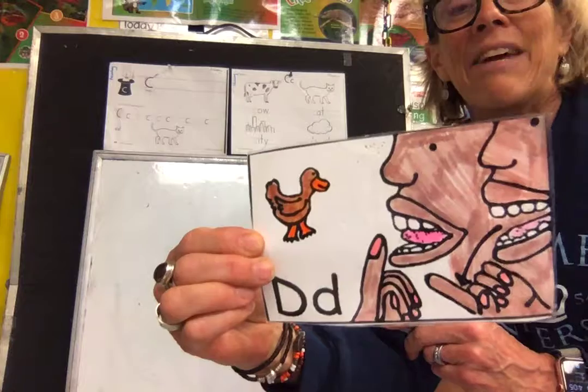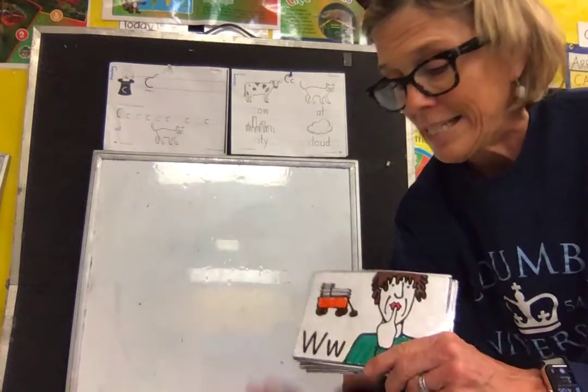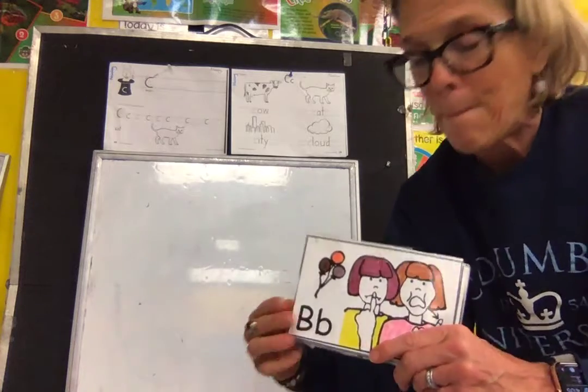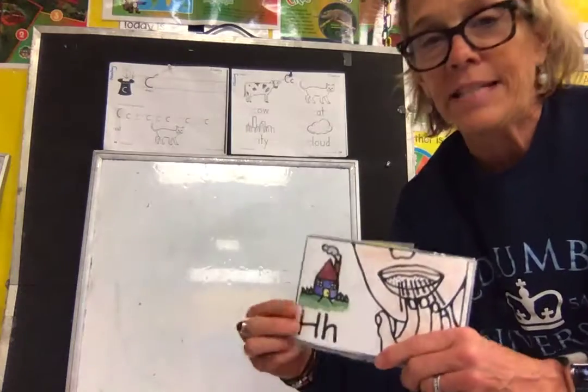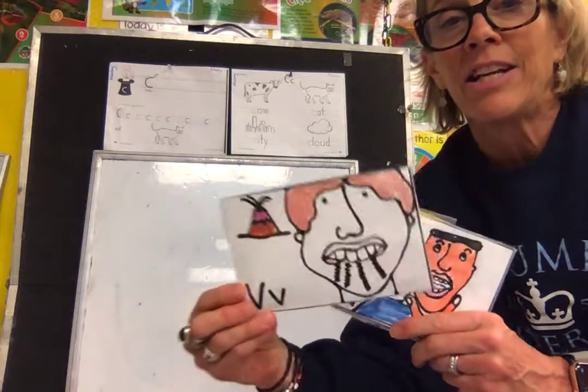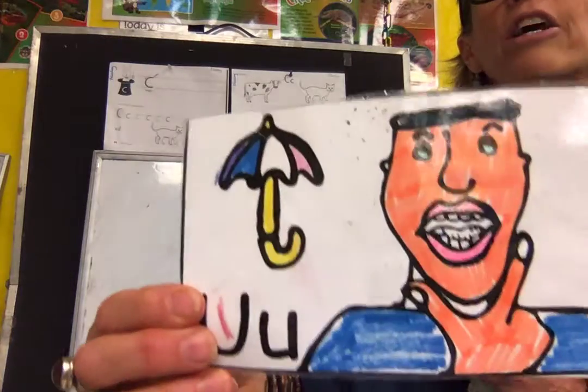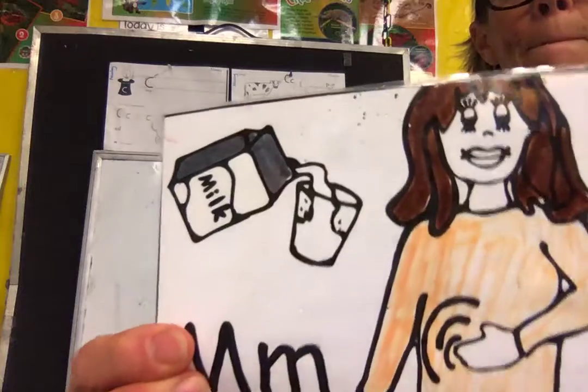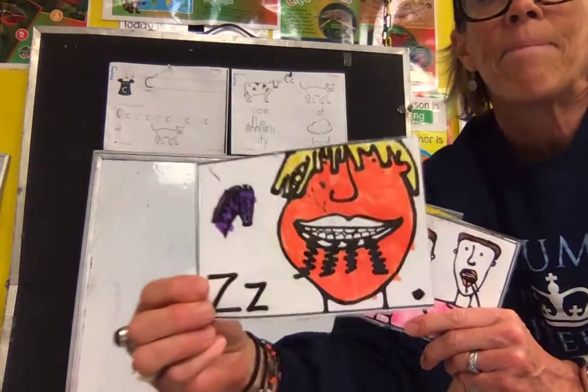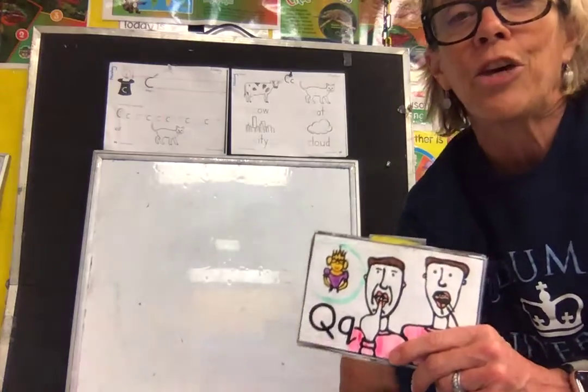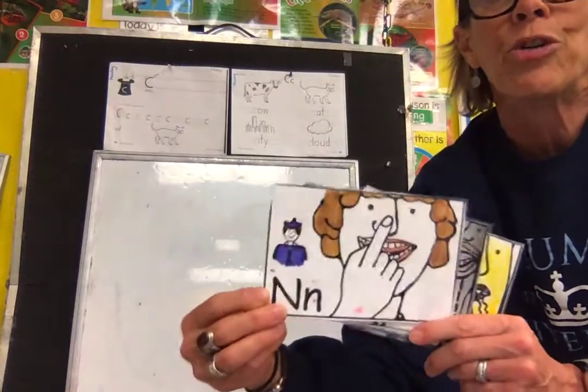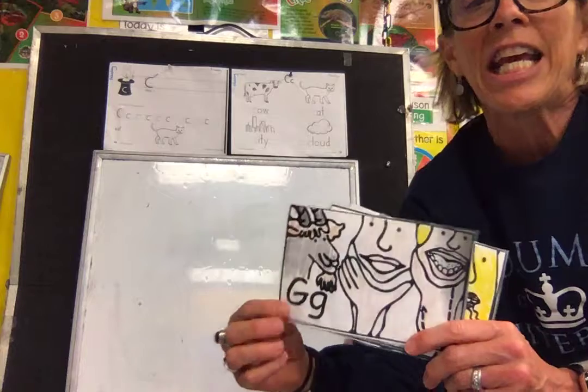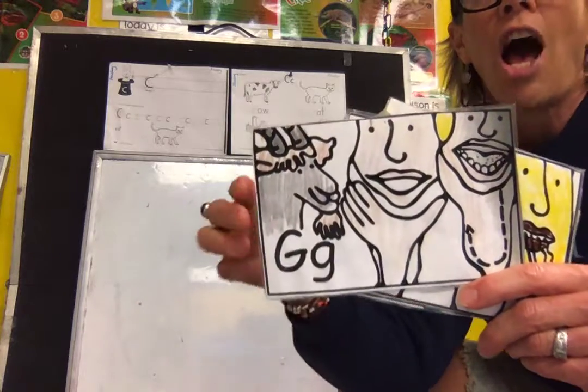D says duh, duh. Remember, not duh. W says wuh. B says buh, not ba. H says huh, feel your hot breath. V like vibrate, vvv. U says uh, look up. M, rub your tummy, mmm. Z, buzz like a bee, zzz. Q is K and W sound, qu qu qu. N, push your nose, nnn. Ch says chuh. G says guh and juh. Good.